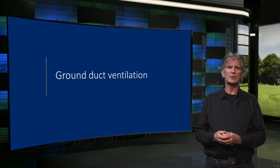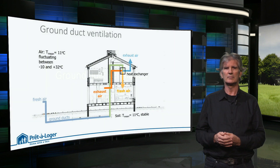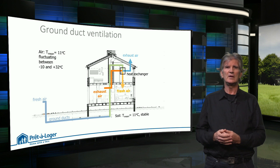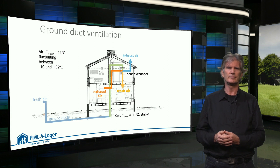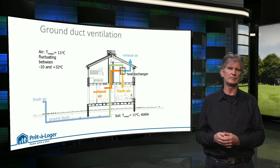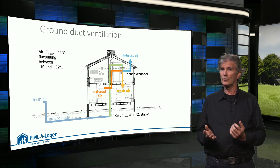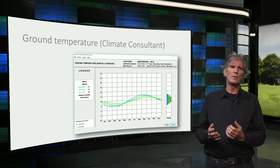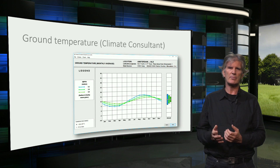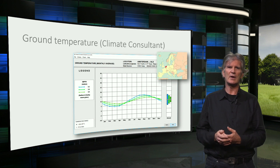Finally, I'll show you a completely different way to exchange heat: ground duct ventilation. Here the incoming air for the ventilation system is let through a duct that is buried underground at a depth of 1 to 2 meters. The ventilation air is preheated or precooled to the ground temperature before it enters the building. Depending on the ground temperature at your location, this can help to reduce the heating demand in winter or the cooling demand in summer. With the program Climate Consultant, you can find the temperature fluctuation in the ground at a depth of 0.5, 2 and 5 meters — here for instance, the graph for the Netherlands.